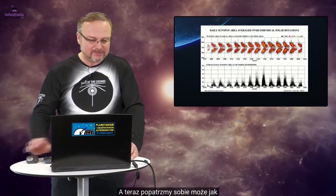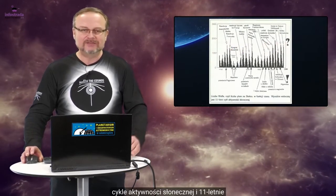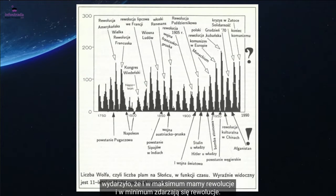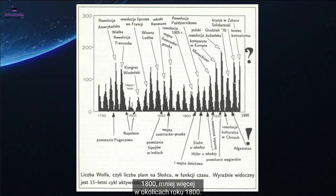A teraz popatrzmy sobie może, jak cykle aktywności słonecznej, 11-letnie cykle, pokrywają się z różnymi wydarzeniami w historii. No widzicie Państwo tutaj na tym wykresie plus notatki, gdzie coś ciekawego się wydarzyło, że i w maksimum mamy rewolucję, i w minimum zdarzają się rewolucje. Mało tego, tam, gdzie było minimum w roku 1800, w okolicach roku 1800, to tam mamy Napoleona, który był bardzo aktywny i prowadził wojny w całej Europie.